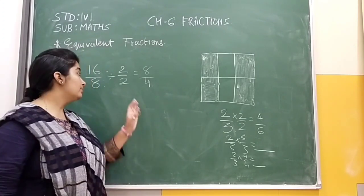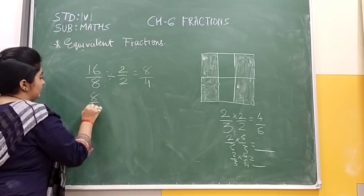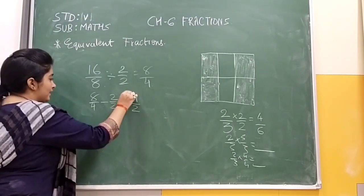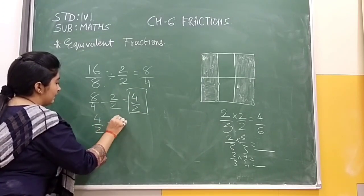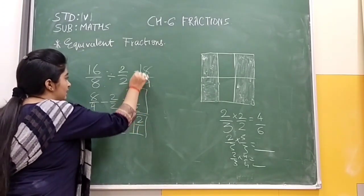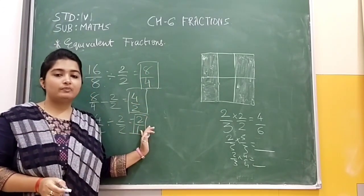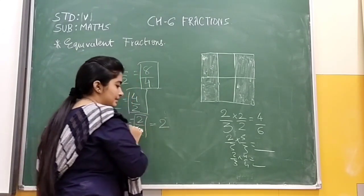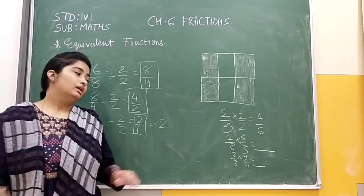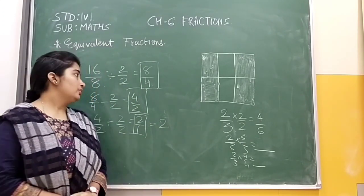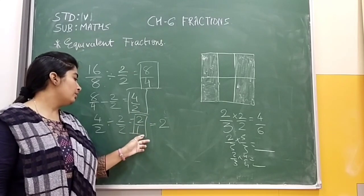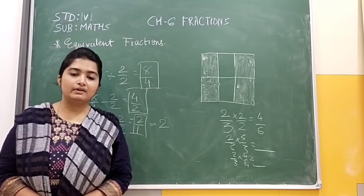We can get more equivalent fractions. Now, eight upon four divided by two upon two gives another equivalent fraction — that is four upon two. And four upon two divided by two upon two gives two upon one. That is also our equivalent fraction. When the denominator is one, we can write it directly as two as well. So from sixteen upon eight, we get the equivalent fractions: eight upon four, four upon two, and two upon one.